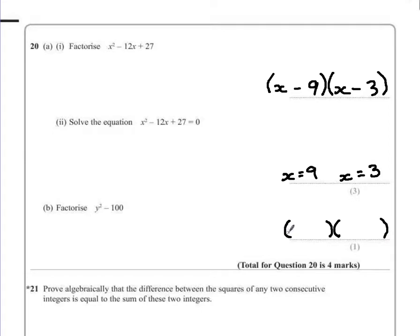Because we have a quadratic that we're factorizing as two brackets, because we have a single y squared, means we have to have y at the beginning of each bracket. I want two numbers that will multiply together to give me negative 100 but add to give me nothing. Now the only way that can actually happen is if we have positive 10 and a negative 10.